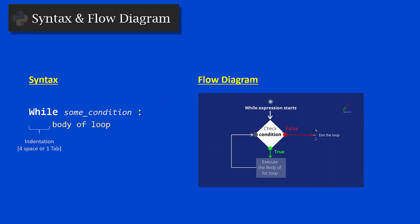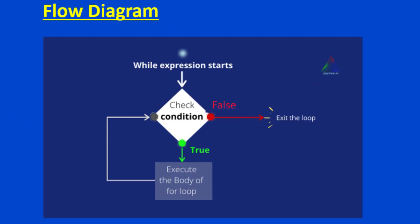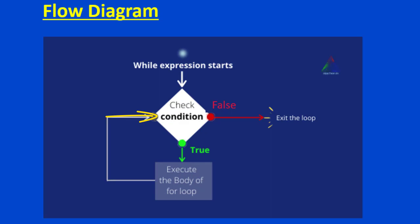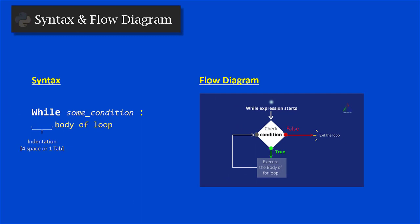Looking at the flow diagram: when the while expression starts, it checks the condition. If true, it goes into the body of the loop, executes it, then comes back to check the condition again. If still true, it executes again. If the condition is false at any point, it exits the while loop. That is how the syntax and flow diagram work for while loop in Python.